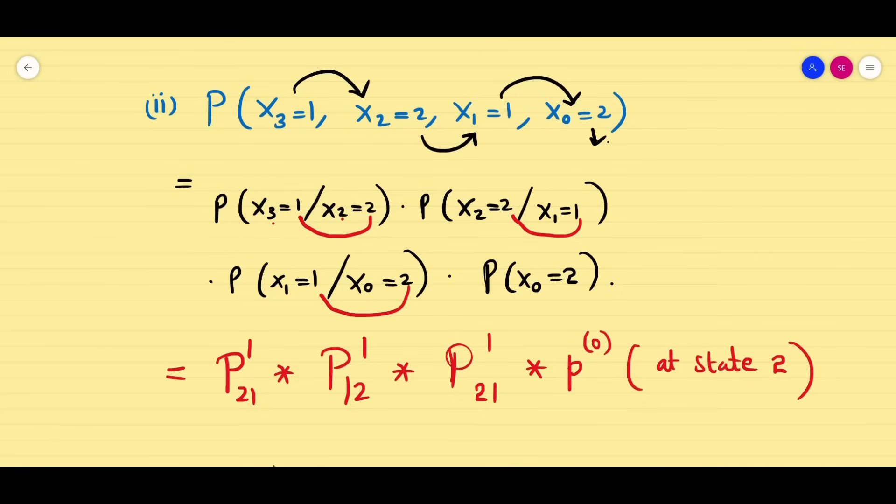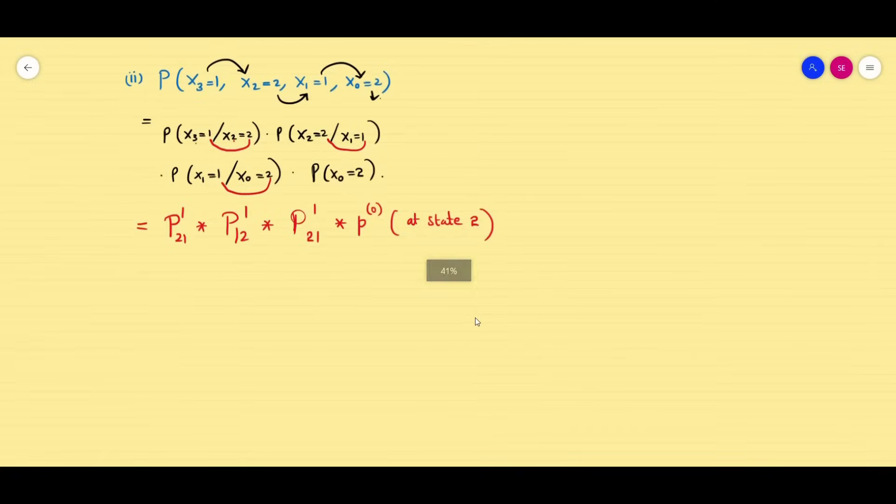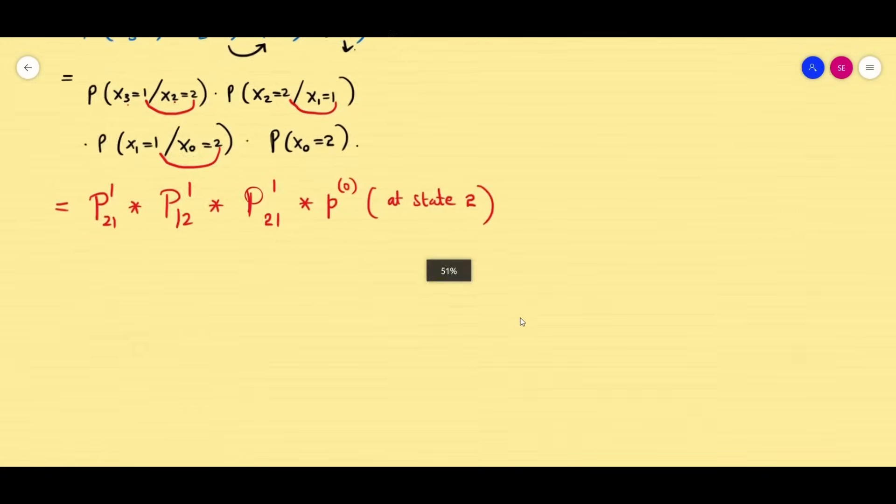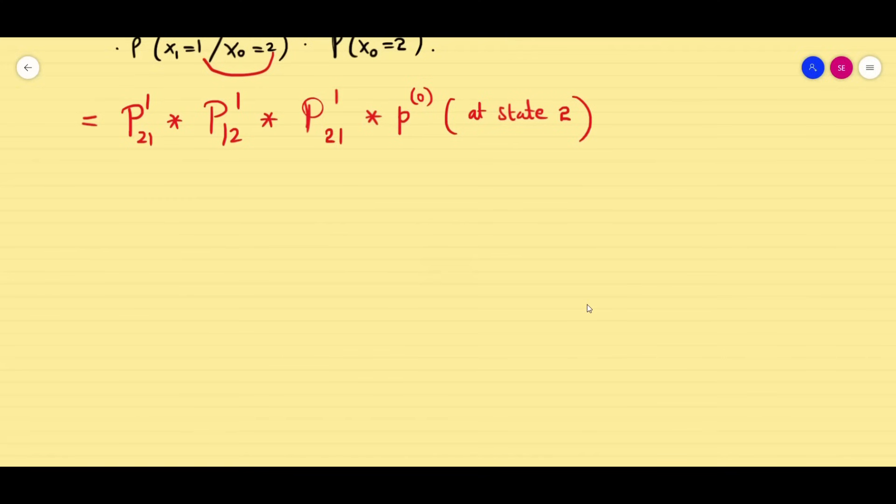So X0 means P0 at state 2. So now you have to go for the original matrix. From there we have to find. For your convenience, I am rewriting the original matrix again for your reference. So capital P is going to be [3/4, 1/4, 0; 1/4, 1/4, 1/2; 0, 3/4, 1/4]. Now you see the states are 0, 1, 2 for rows and 0, 1, 2 for columns.